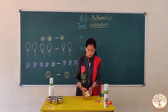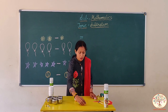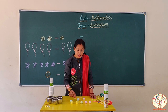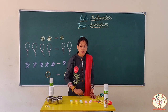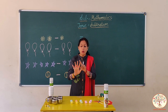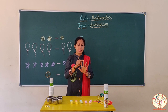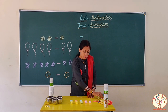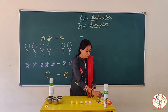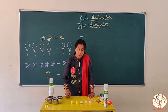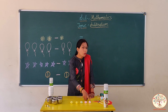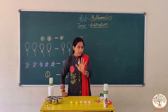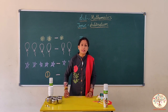Now, look here. What do I have? These are pom poms. Let's count them — one, two, three, four, five, six, seven, eight, nine, ten. I have ten pom poms. If I take away five pom poms — one, two, three, four, five — how many pom poms are remaining? Let's count — one, two, three, four, five. Ten minus five is equal to five.